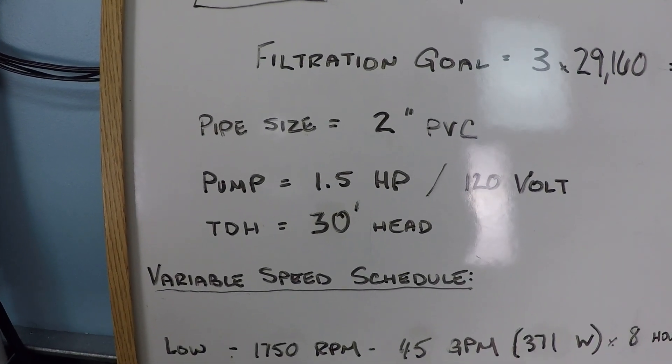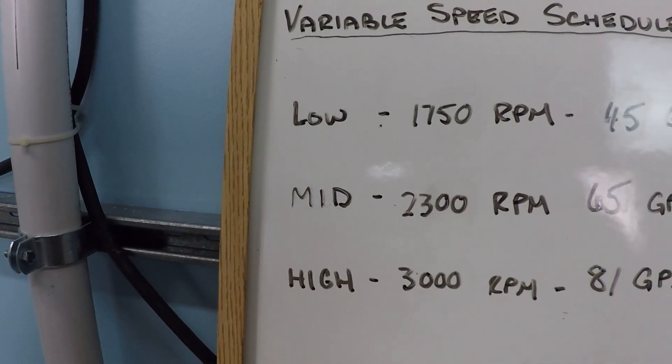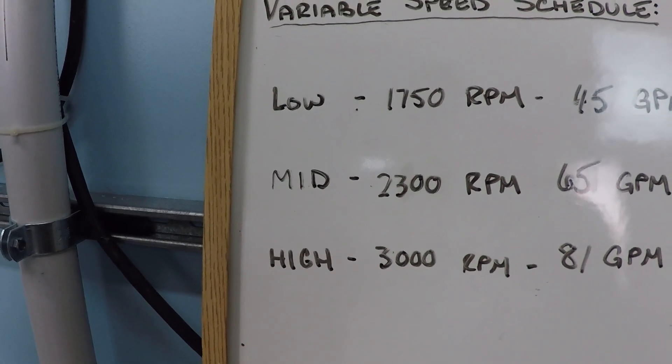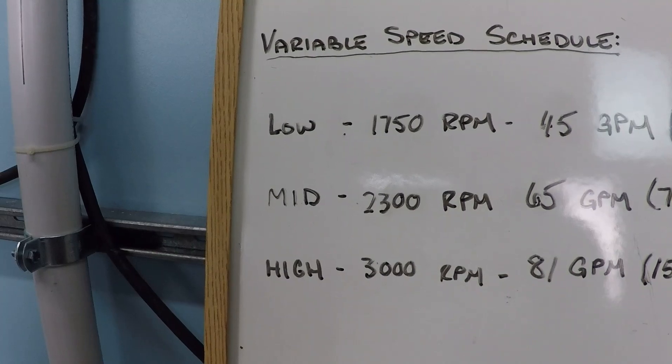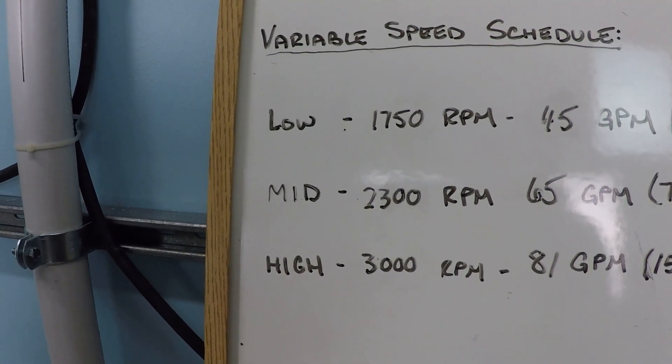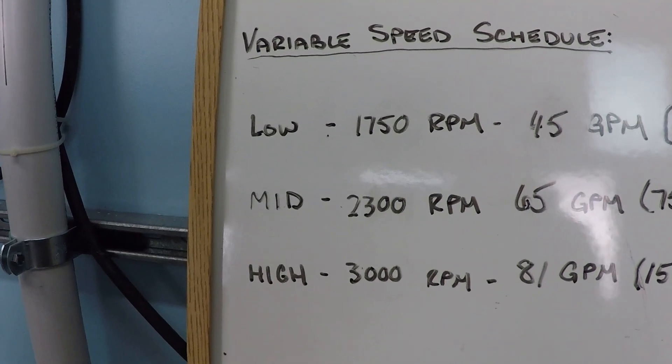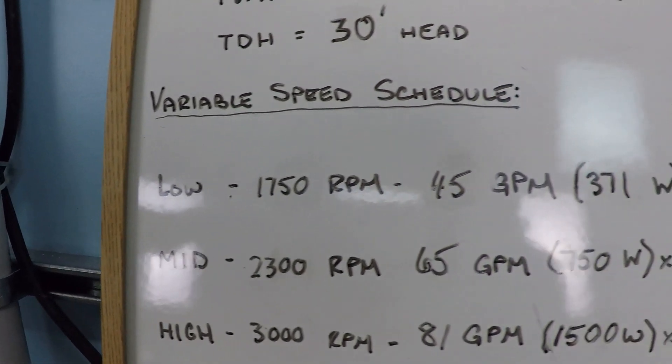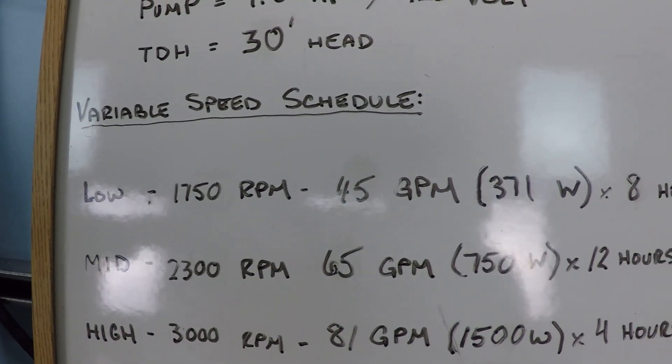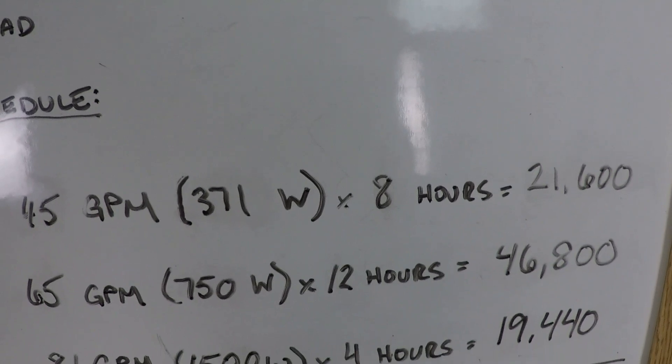That is a heck of a lot of water. You're going to notice that on this variable speed schedule here, the low starts at 1750. Sometimes it could start 700 or 900 and run that way for 12 or 15 or 18 hours a day sometimes even. But on this big pool, that's not the case. We're starting low at 1750, which will get us about 45 gallons per minute, and we're doing that for about eight hours a day.